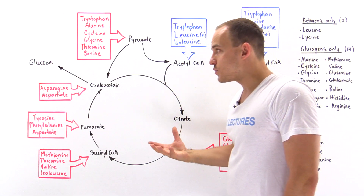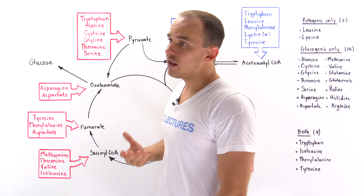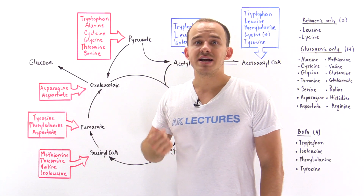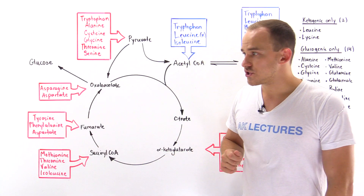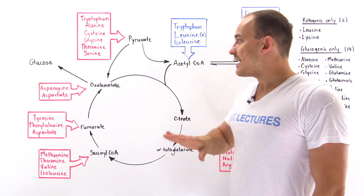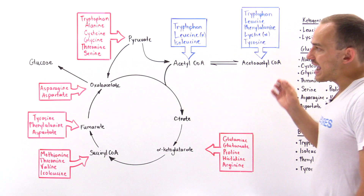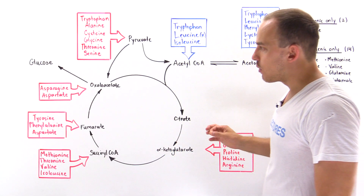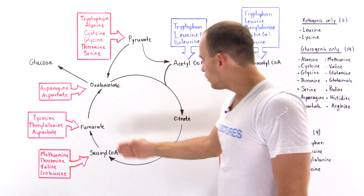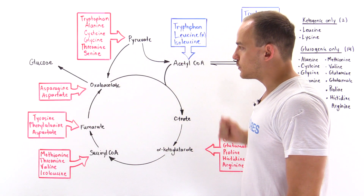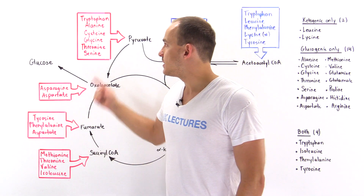In the next several lectures, we're going to look at the actual pathways that lead to all these different intermediates when we metabolize the 20 amino acids.